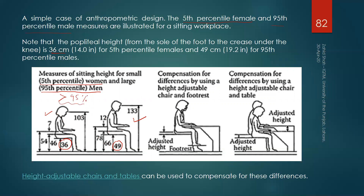This adjustability from 36 to 49 centimeters actually accommodates more than 95 percent of the mixed population — both males and females. The same principle applies for the height of the desk: the range of adjustability would be from the 5th percentile female to the 95th percentile male, say from 54 centimeters to 78 centimeters, accommodating more than 95 percent of the population. It is ideal to make both the height of the chair and the desk adjustable.